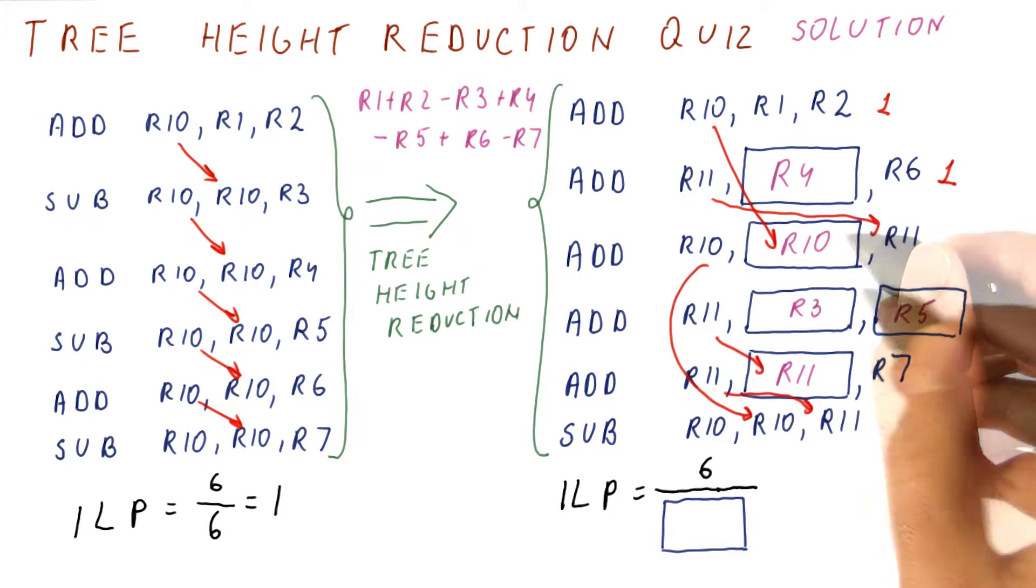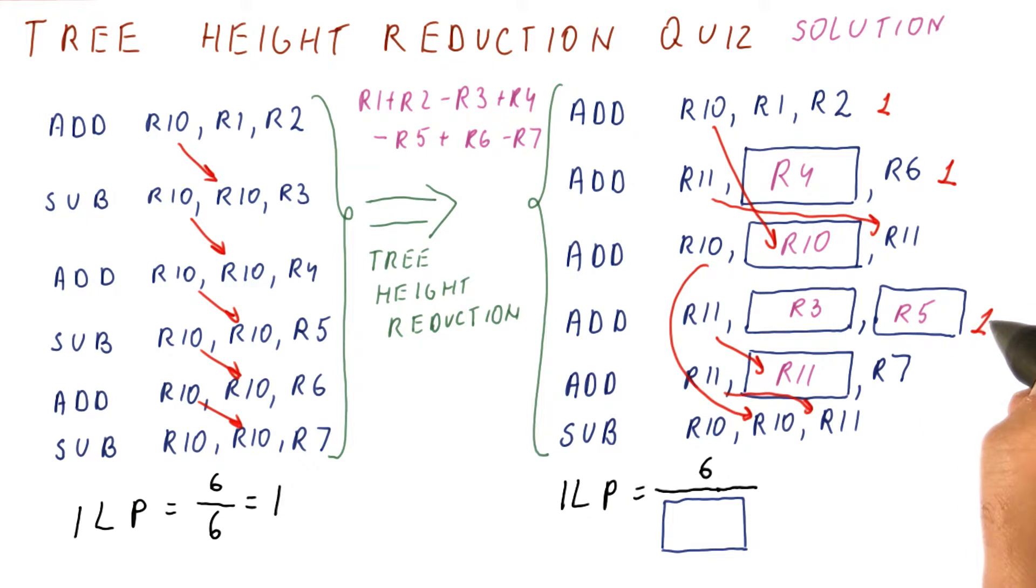This cannot because it has to wait. This can. So this is also done in the first cycle. And then this has to wait for that and so on. So in our first cycle, we've already done three instructions, half of the instructions that we had.